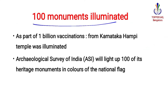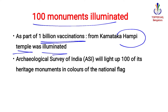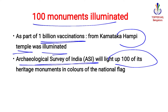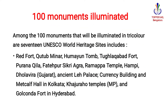100 monuments were illuminated as part of India achieving 1 billion vaccinations. Even in Karnataka, the Hampi temple was illuminated with the tricolor of the national flag. The Archaeological Survey of India lit up these 100 heritage monuments in the tricolors of the national flag.